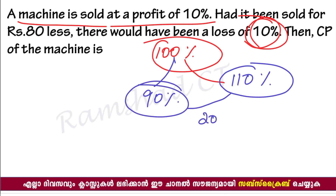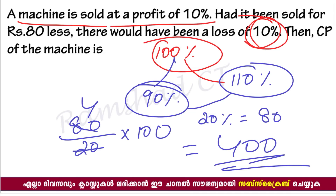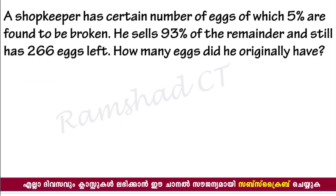The machine is sold at a profit of 10%. Working through the cost price: the machine is sold at a profit of 10%, so using the profit and loss formula, we calculate the cost price.